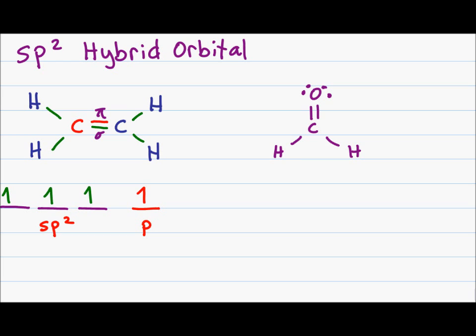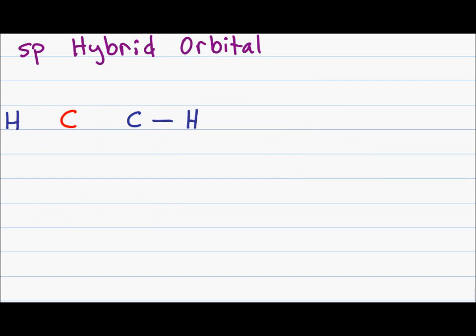For example, in this formaldehyde molecule here. The sp hybrid allows us to do a carbon to carbon triple bond such in this ethine molecule here.